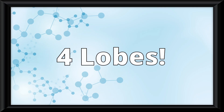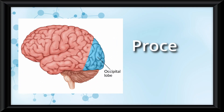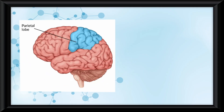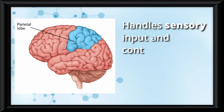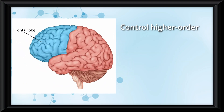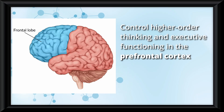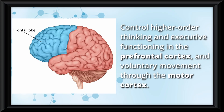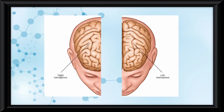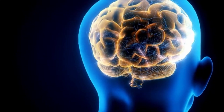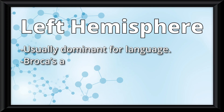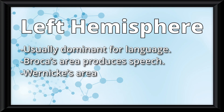Each hemisphere has four lobes. Occipital lobes, located at the back, process vision. Temporal lobes, on the sides, process auditory information and language. Parietal lobes, near the crown of the head, handle sensory input and contain the somatosensory cortex, which processes touch. And frontal lobes, behind the forehead, control higher-order thinking and executive functioning in the prefrontal cortex, and voluntary movement through the motor cortex. Some people with extreme epilepsy have to get their corpus callosum separated, and research on these patients revealed differences between the two hemispheres. The left hemisphere is usually dominant for language, and within it, Broca's area produces speech while Wernicke's area comprehends it.